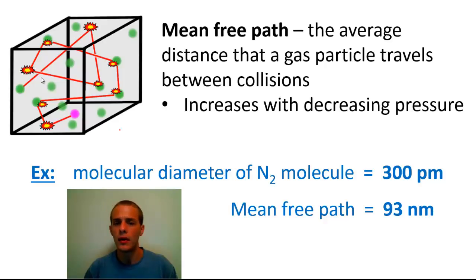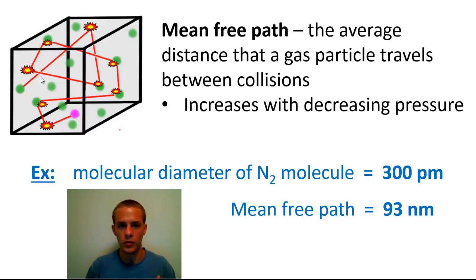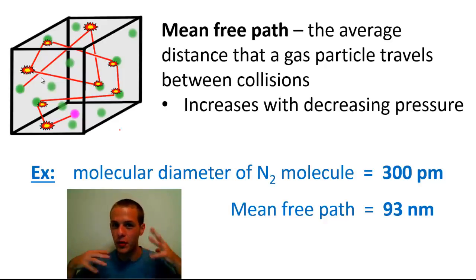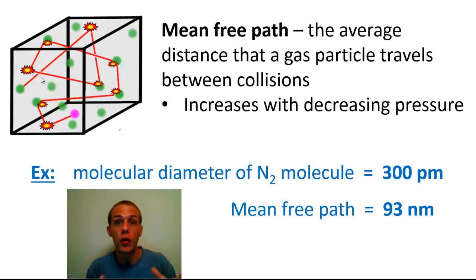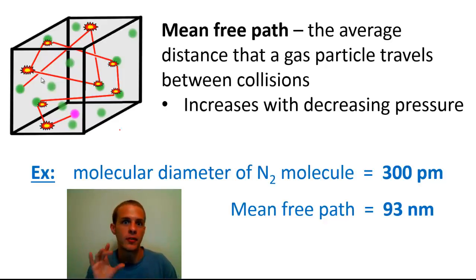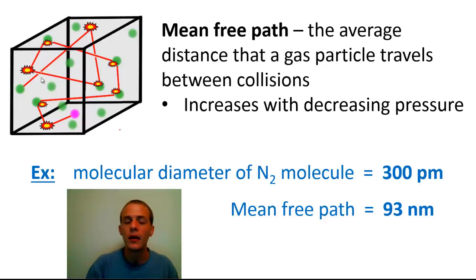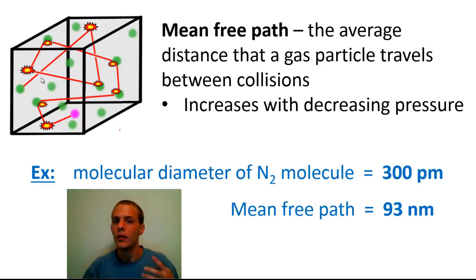So even though nitrogen molecules are very small and traveling very fast, they're not going to travel very far before slamming into another particle. 300 picometers and 93 nanometers might be hard to grasp in relative terms, so to put things into perspective: imagine a nitrogen molecule was about the size of a golf ball. If so, that golf ball would travel about four feet on average before slamming into another golf ball. That's mean free path.